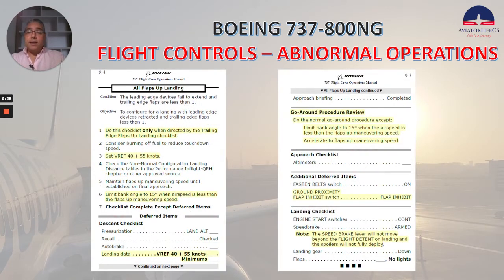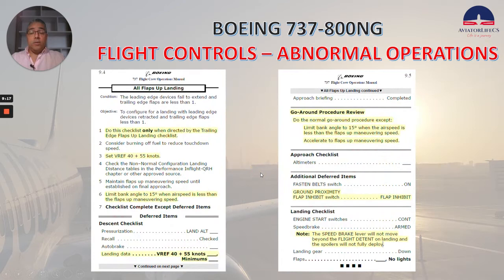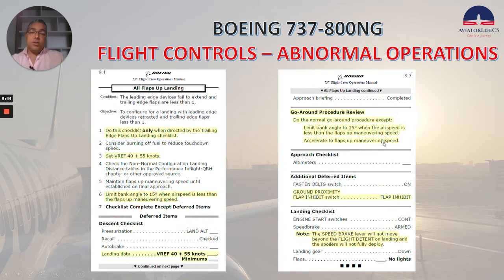Now let's go to the flaps-up landing. Here I highlighted things I believe are important from the FCTM — please take your time to go through it. The checklist says: do this checklist only when directed by the trailing edge flaps up landing checklist. Set V-Ref 40 plus 55 knots. Limit bank angle to 15 degrees when airspeed is less than the flaps-up maneuvering speed. For go-around, do the normal go-around procedure except limit bank angle to 15 degrees when airspeed is less than flaps-up maneuvering speed. Accelerate to flaps-up maneuvering speed. Remember the ground proximity flap inhibit switch goes to flap inhibit. In the landing checklist, note the speed brake lever will not move beyond the flight detent on landing, and the spoilers will not fully deploy.